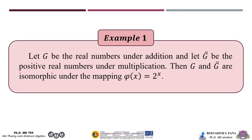For the first example, let G be the real numbers under addition and let Ḡ be the positive real numbers under multiplication. Then G and Ḡ are isomorphic under the mapping φ(x) = 2^x.